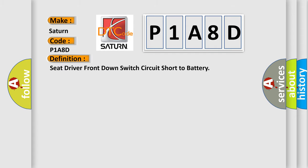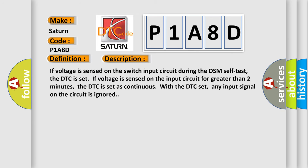Seat-driver front down switch circuit short to battery. And now this is a short description of this DTC code. If voltage is sensed on the switch input circuit during the DSM self test, the DTC is set. If voltage is sensed on the input circuit for greater than 2 minutes, the DTC is set as continuous. With the DTC set, an input signal on the circuit is ignored.